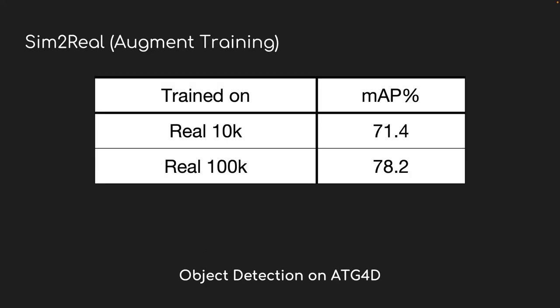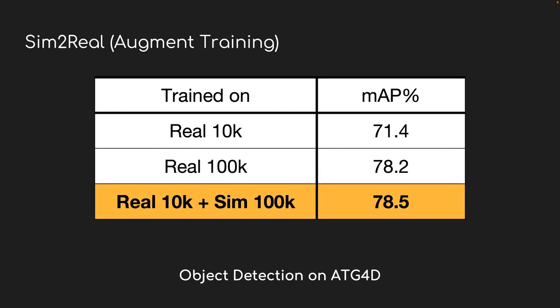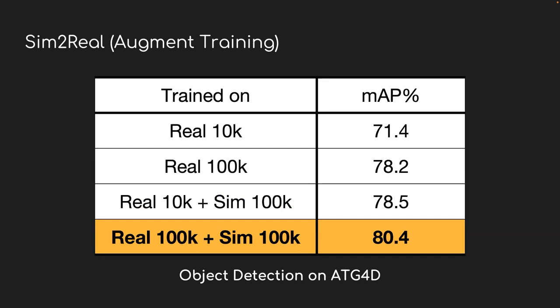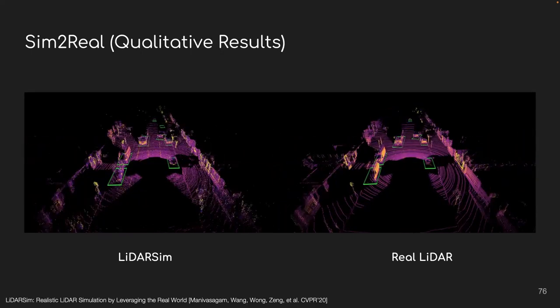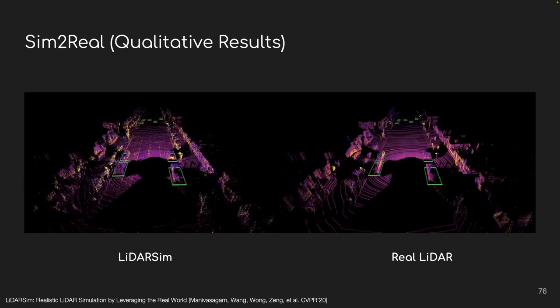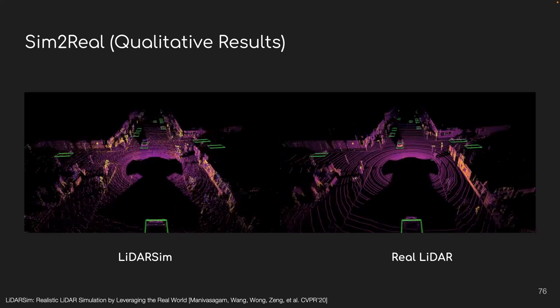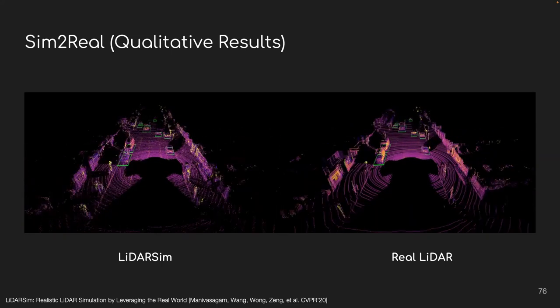Okay, so we talked about the testing gap. And then I just want to mention one another thing, which is the training gap. So more impressively, because our domain gap is really small, our simulated data can actually be used to augment real data and enhance learning. For example, if we just train on 100,000 examples from real data, the detection performance is around 78%. However, after augmenting with sim data, we can get even better performance with only 10% of real data. And if we use the full set of the 100k real data, as well as the simulated data, we can boost the performance even more. So to give you a little bit flavor of how the simulated LiDAR looks like, we show the qualitative results of simulated and real LiDAR side by side, as well as running the same detection model on both of these data sets. As you can see, there is almost no difference.